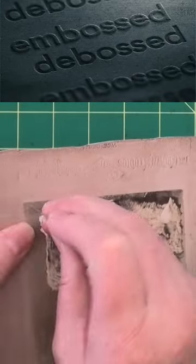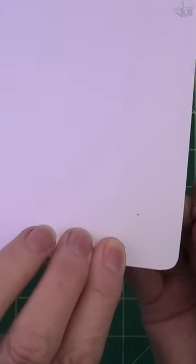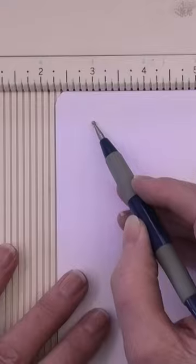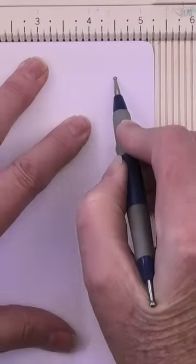Start by marking all four corners with a pin on the right side of your work. With the wrong side facing up, line the pinhole with a track on the scoreboard and score from pinhole to pinhole.